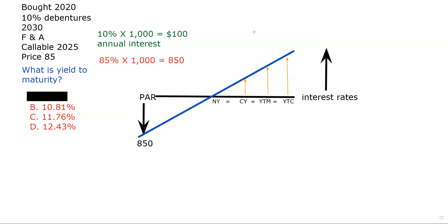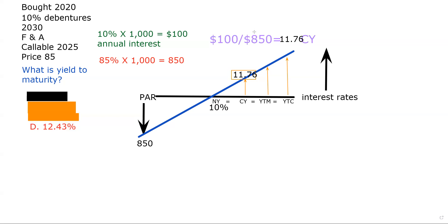I take a strategic pause — deep breath — I should be able to do current yield: annual interest divided by market price, what an investment pays me divided by what it costs me. I get 11.76%, so I can eliminate choice B and choice C, leaving me with the answer by process of elimination: 12.43%. Remember — inch by inch your Series 7 is a cinch, yard by yard your Series 7 is hard. Send any explications you have like this to me and I'm happy to work through them. Bye-bye.